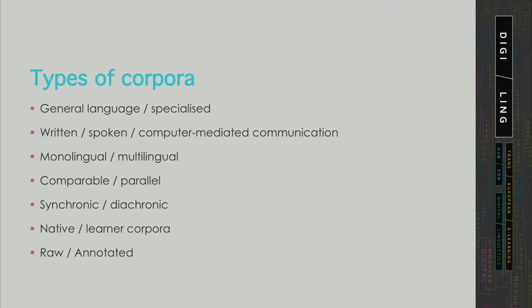Let's do a quick review of types of corpora. We can categorize corpora based either on their scope — so we speak about general language or reference corpora as opposed to specialized corpora. Then we may categorize them on the basis of the medium of communication, so they can either be composed of written text, spoken text, or computer-mediated texts, which usually represent a separate category.